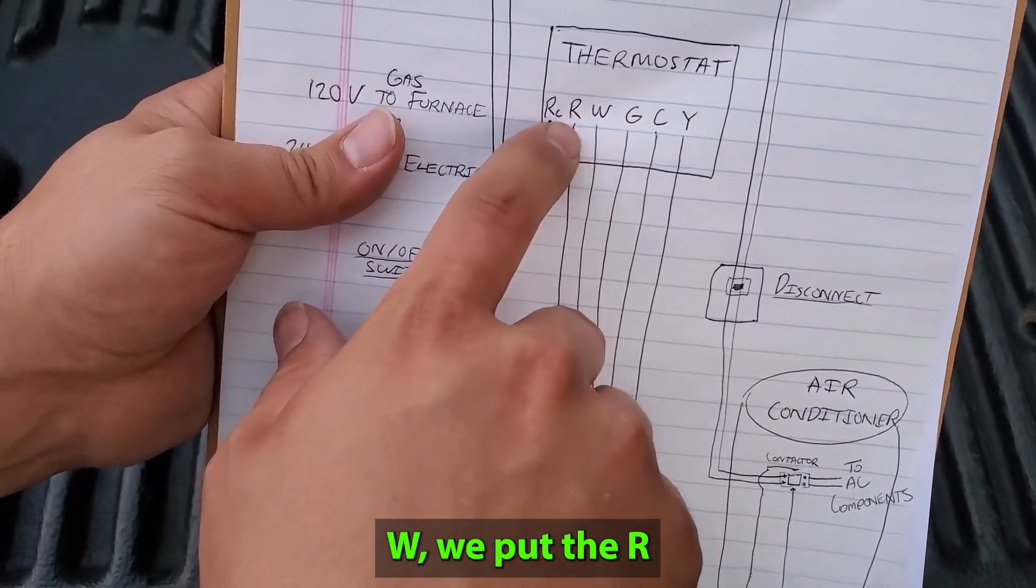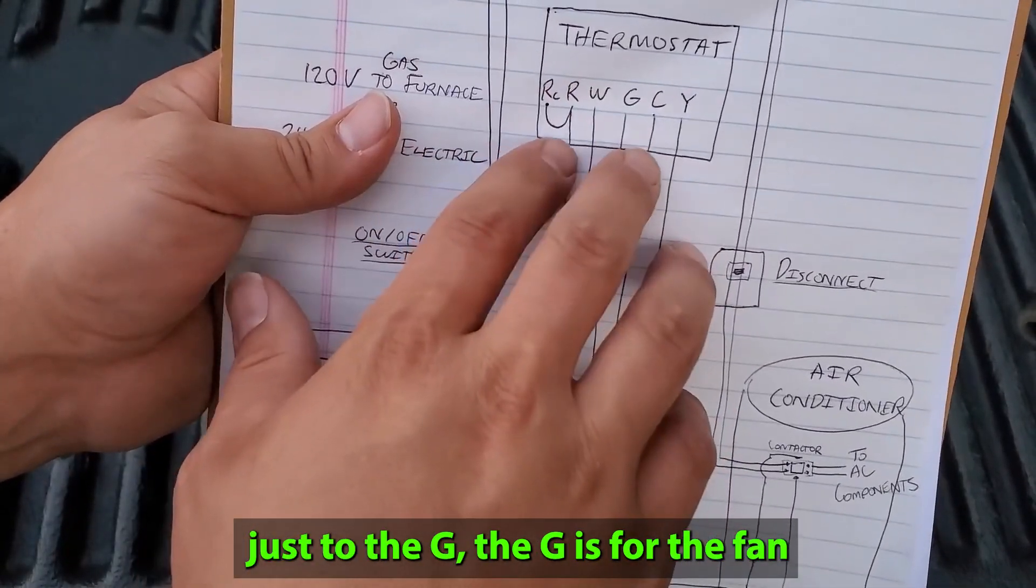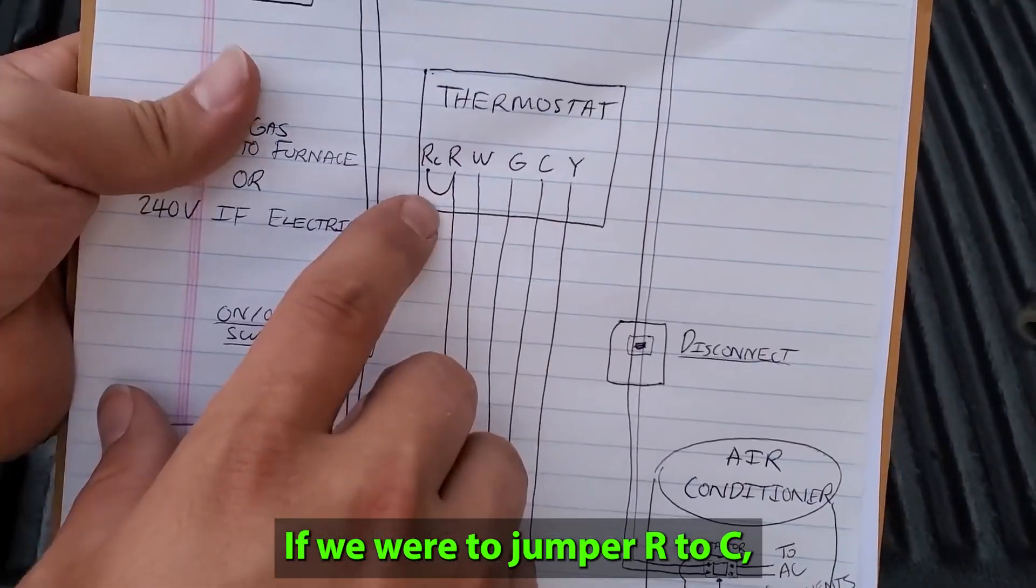Instead of putting the R to the W, we put the R just to the G. The G is for the fan, and so that will bring on your furnace fan.